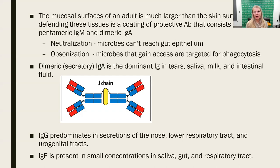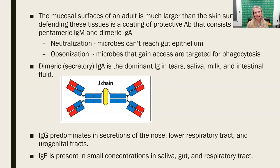IgG can be found, but is mainly present in the respiratory tract and urogenital tract. IgE is also present, often in the respiratory tract and can be found in the gut and saliva. But IgA is definitely the dominant antibody in mucosal secretions.